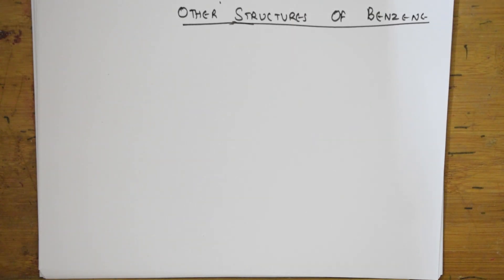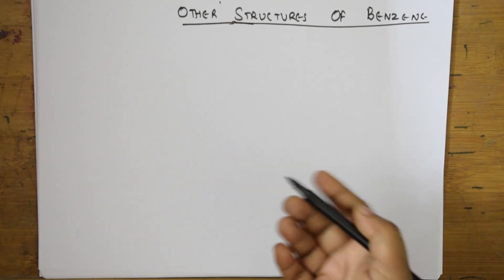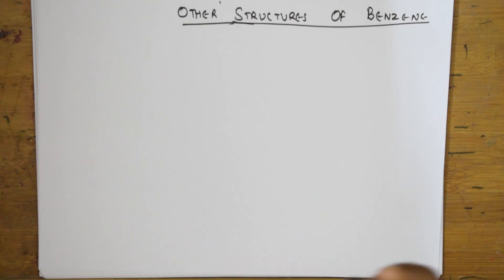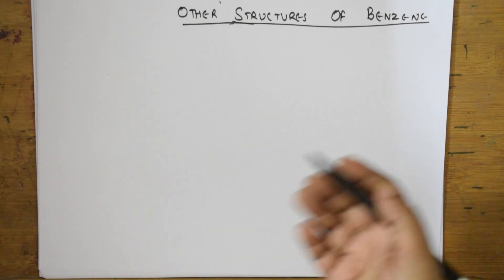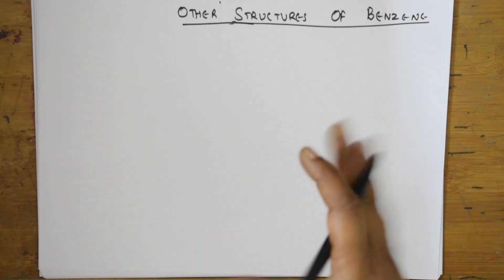In the previous video we have seen what is the Kekulé structure and what are the different objections made to it. Finally, the Kekulé cyclic structure was accepted though we had certain objections. We will also be seeing in this video today the other structures that were proposed for benzene. The most acceptable one was the orbital diagram based on the concept of resonance and delocalization, which we will study.